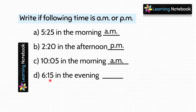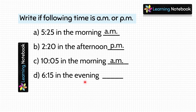6.15 in the evening. Time is given in the evening and evening is after 12 noon. Time in the evening is always in PM. So this time is 6.15 PM.